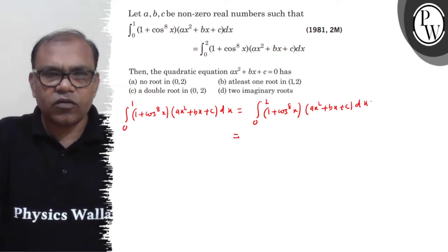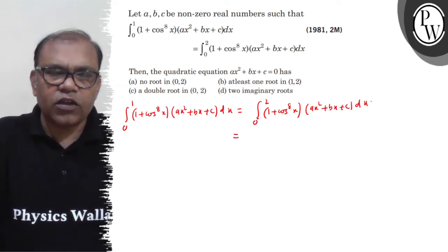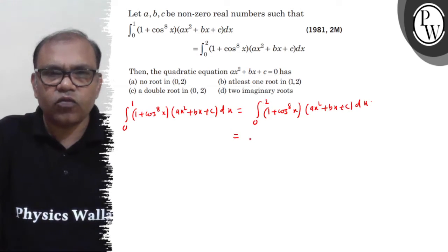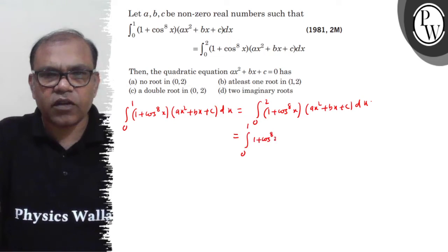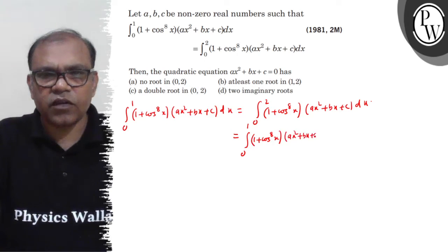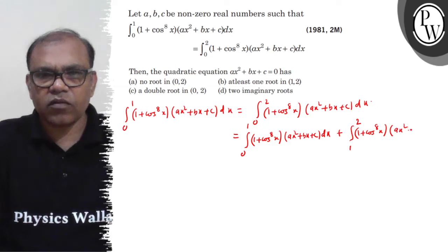Now look, the right-hand side, the integration limit is 0 to 2. Split this into two parts. Look, 0 to 1, (1 + cos⁸x)(ax² + bx + c)dx plus 1 to 2, (1 + cos⁸x)(ax² + bx + c)dx.